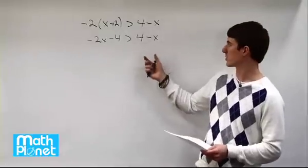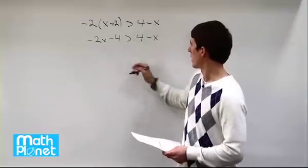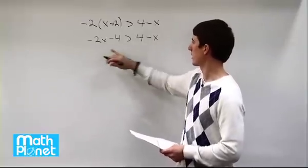So now we need to combine like terms. We'll put this 4 here and this x here. Actually, we can do it the other way to get this positive. So we'll add 2x to both sides.